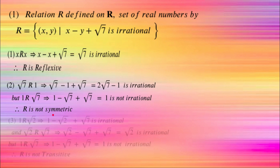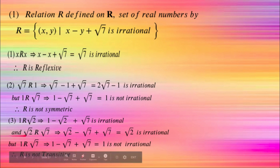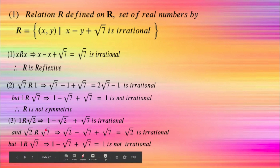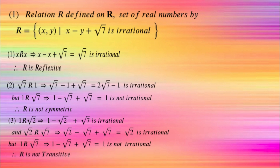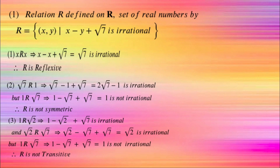Similarly for transitivity, consider an example: 1 related to √2 gives 1 minus √2 plus √7, which is irrational. And √2 related to √7 gives √2 minus √7 plus √7, which is irrational. But 1 related to √7 gives 1 minus √7 plus √7, which equals 1 and is not irrational. So 1 is related to √2, √2 is related to √7, but 1 is not related to √7. It is not transitive.